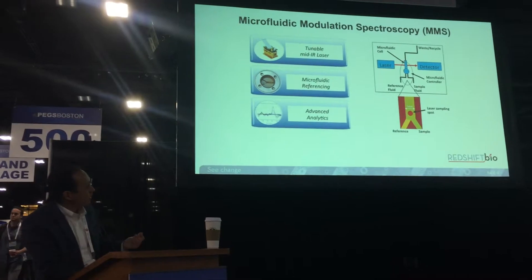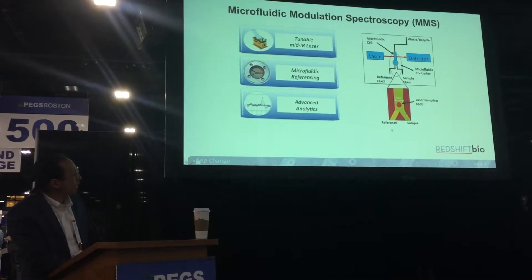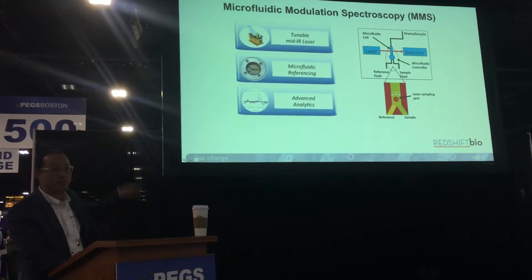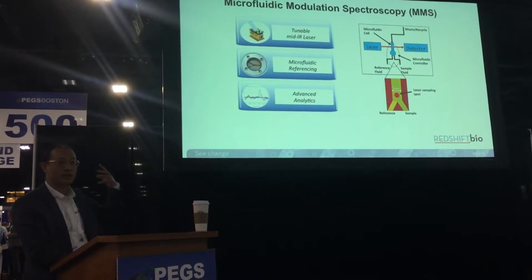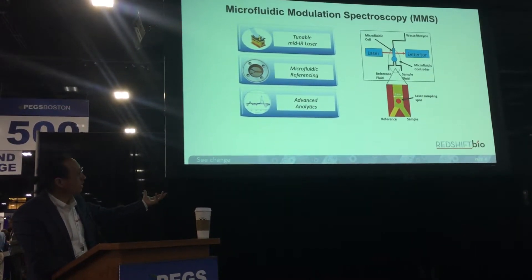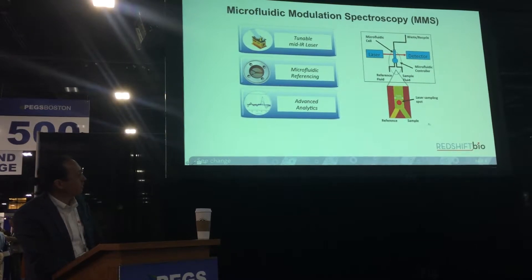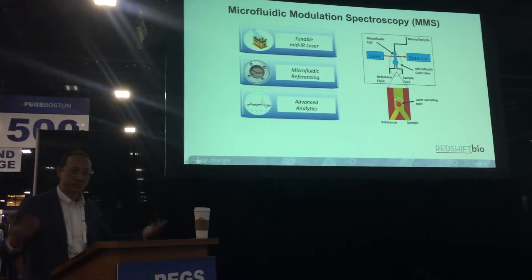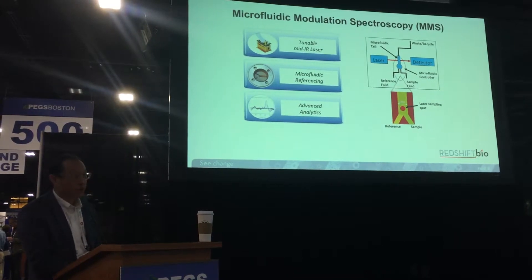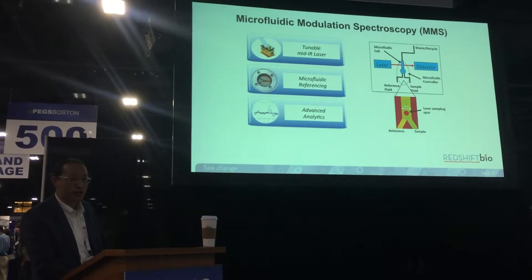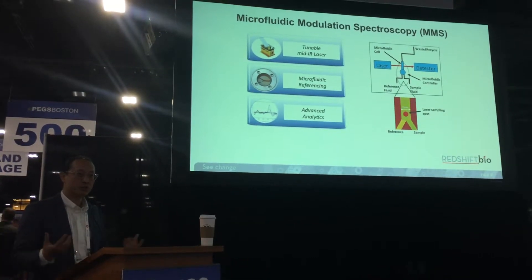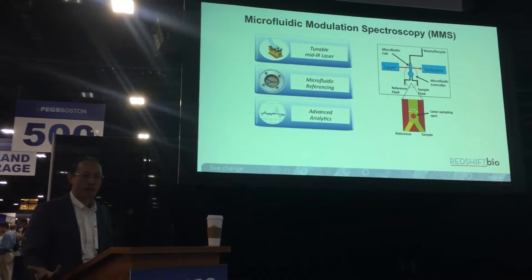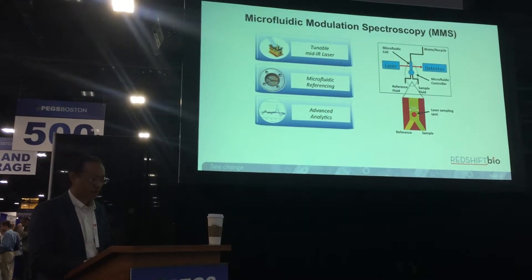The animation shows what's going on: we have a sample inlet and a reference inlet. The sample flows in first, and the laser goes into the page — shown by the red dot. We get an absorbance measurement very quickly in a few microseconds, at which point a valve shuts the sample flow off and turns the buffer flow on. We're modulating very, very quickly and automatically. The third critical piece is the advanced analytics, because if you're not able to process the data reliably, robustly, and consistently, you'll have a lot of variability in your results.